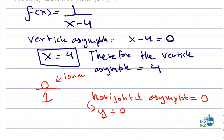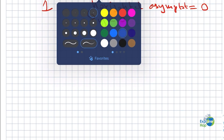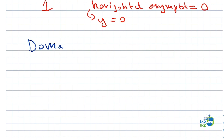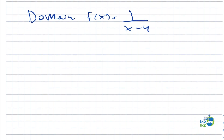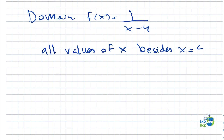So now we have the vertical asymptote and the horizontal asymptote. Now let's figure out the domain and range. For the domain of our function f of x equals 1 over x minus 4, we simply need to know what the vertical asymptote is. The vertical asymptote is 4, so our domain will be all values of x besides x equals 4.